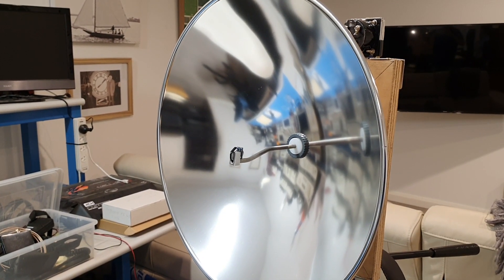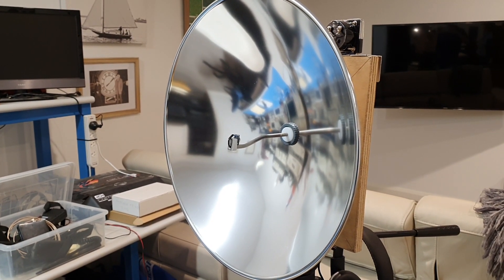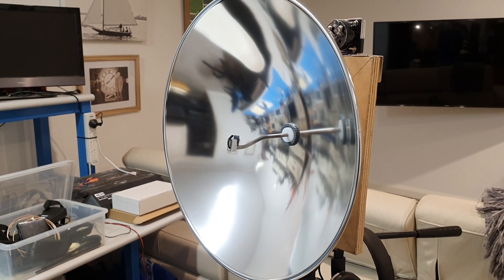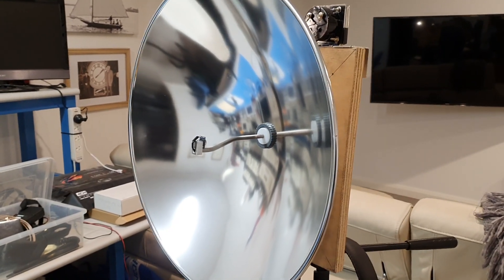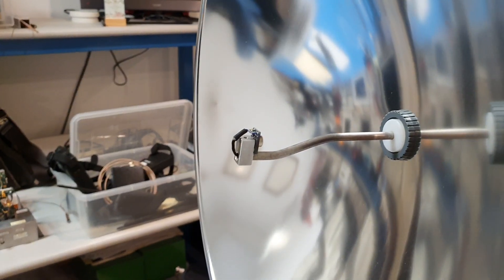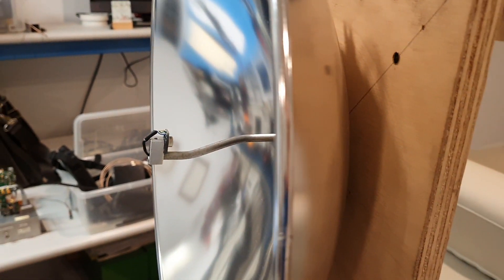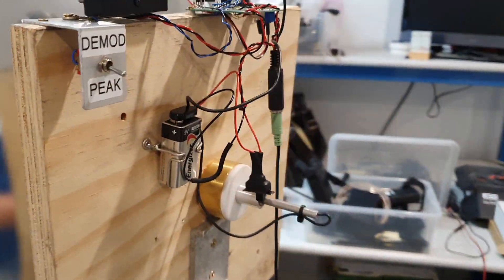Hello all, this is Andrew VK3CV with a full demonstration of the 30 terahertz receiver and transmitter system. This is our receiver unit, a parabolic reflector with our Melexis sensor in the focal point, and around the back of the unit here we